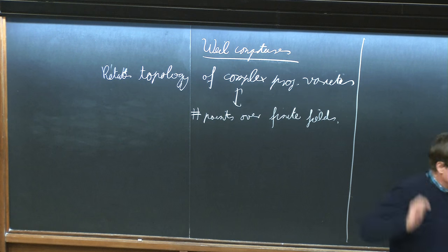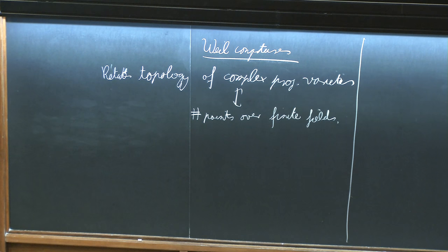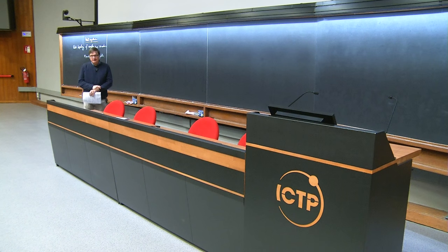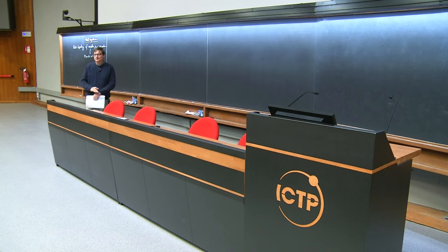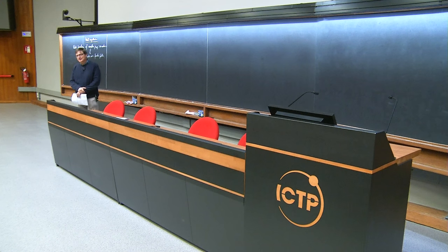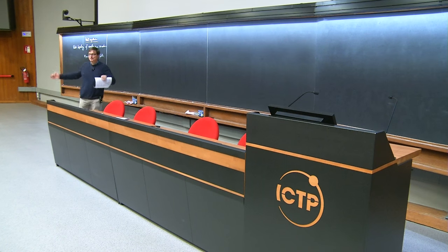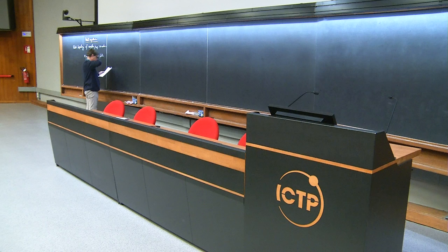This is directed mostly towards the diploma students, so I will sometimes refer to the lectures you had. One of the advantages of this topic is that it uses several things and shows that mathematics is a unity — you should kind of see it as such. So first, we talk about algebraic geometry. Let me explain what a projective variety is.